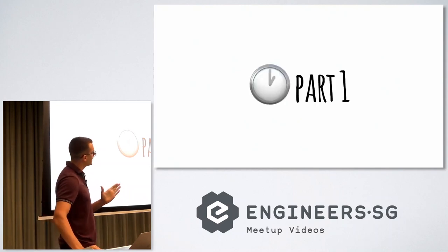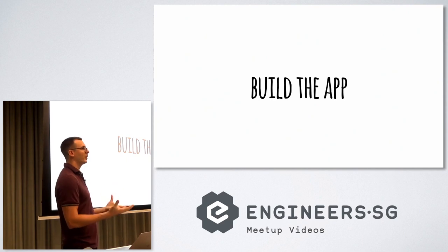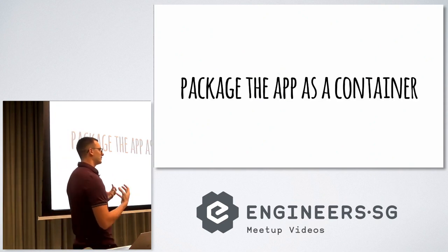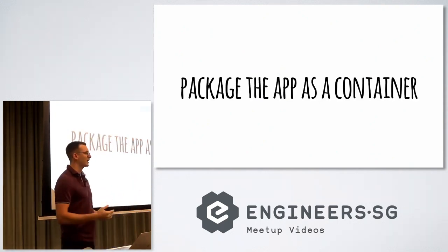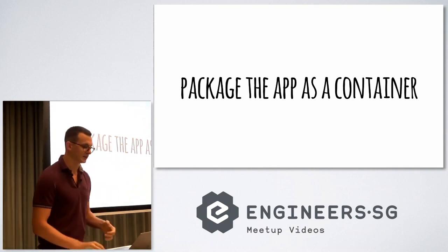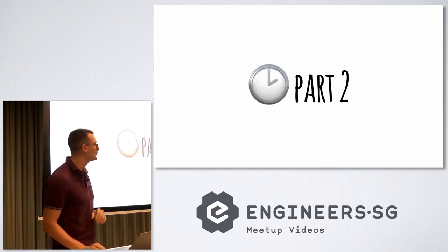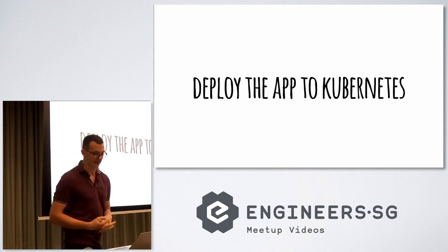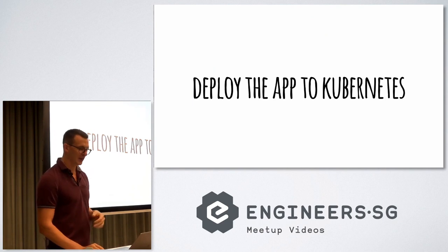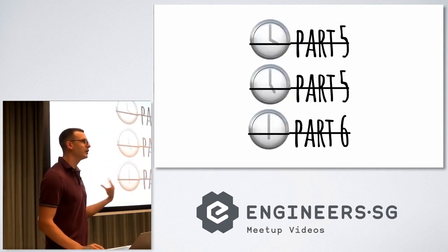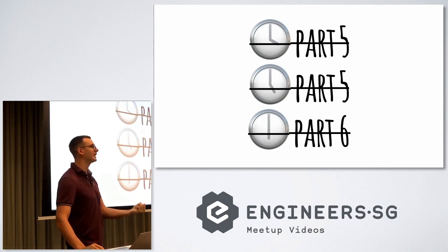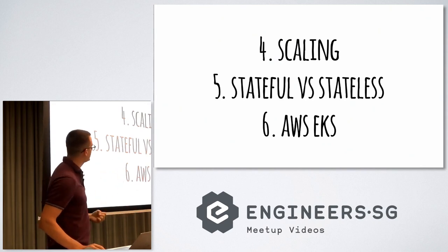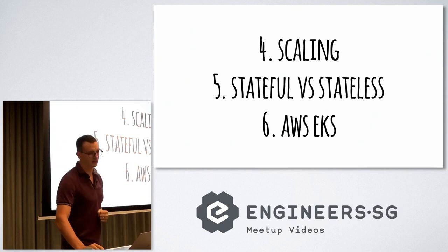The plan is like this: we're going to build an application first, then package it as a container, because Kubernetes doesn't understand applications like Java or Node.js — the only thing it understands is containers. Then we deploy that into Kubernetes. There are more parts we won't do today — scaling, adding state, and deploying into the cloud — but you can take the material home and practice.